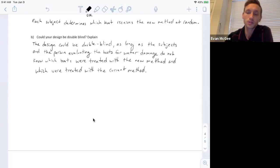Good. So as long as the person wearing the boots and the person measuring the damage, the water damage, don't know which one was treated with the new or the current method, then it could be double blind. And this might be a benefit because if they know they're participating in this experiment, then they might not intentionally, but since they're aware of it, they may avoid more water with this new treatment. And obviously the person measuring the shoe, if they don't know which one received the treatment, then it'll help them to be unbiased in their measurements.